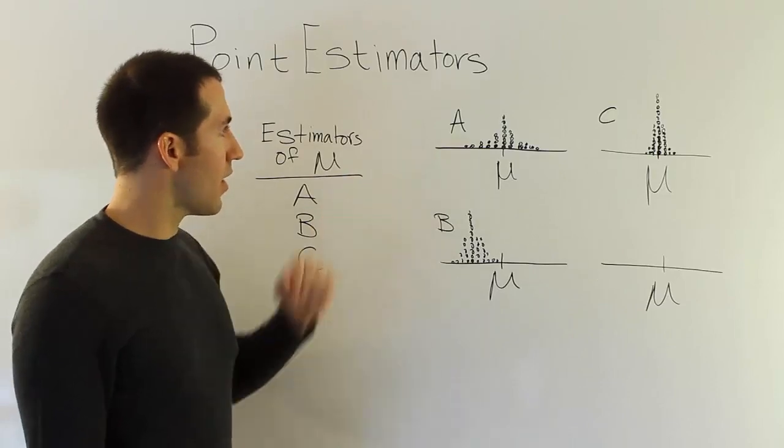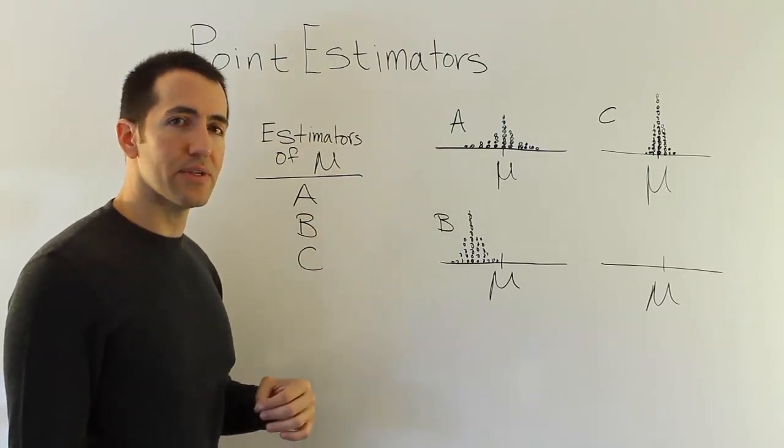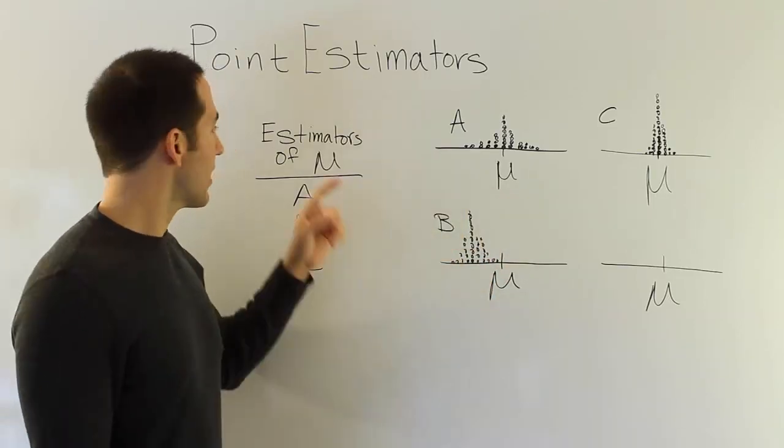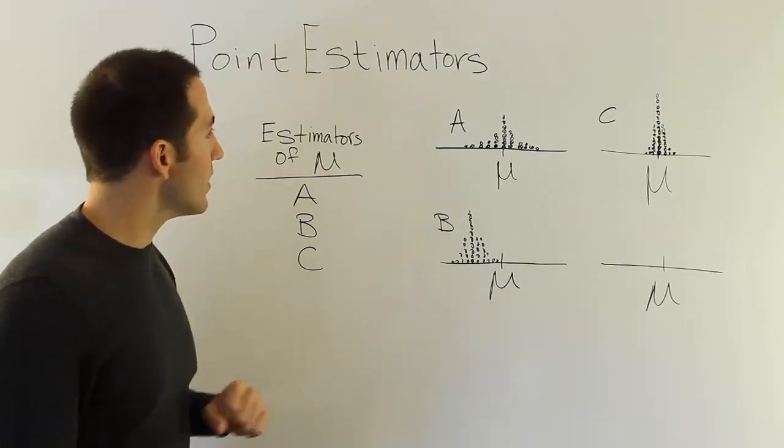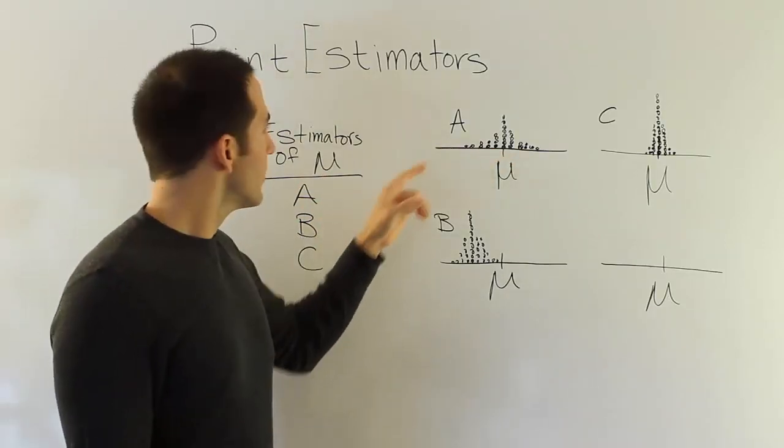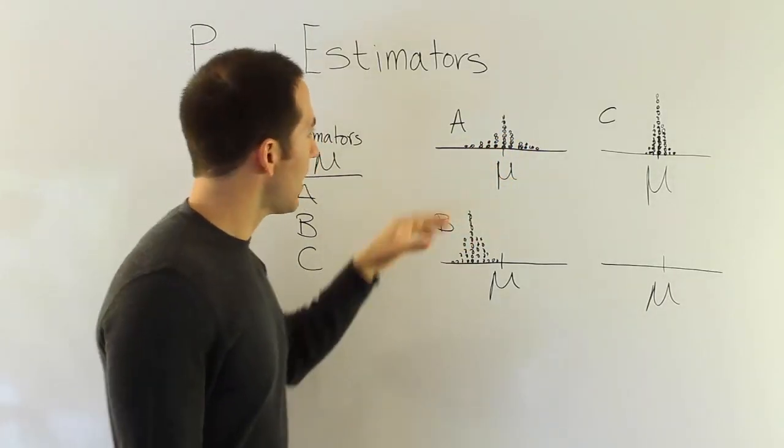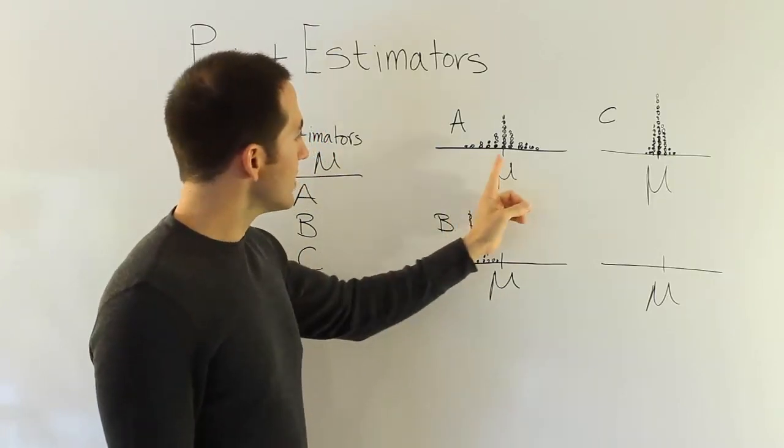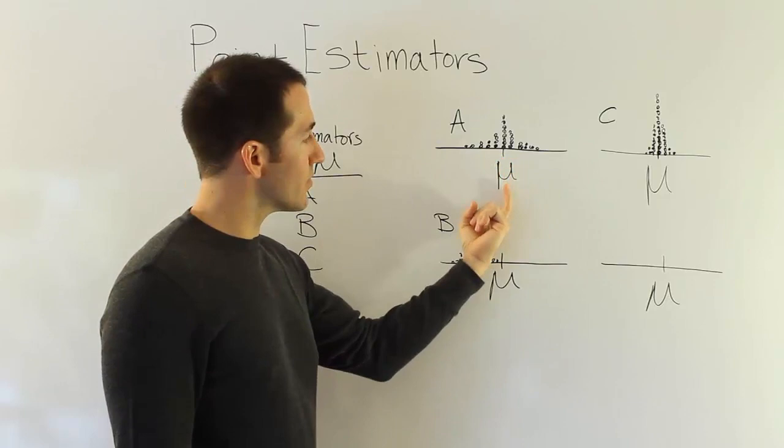So let's talk about how A, B, and C have done, and try to figure out which one we would like to use if we were trying to know the true population value for mu and we had to rely on one of these estimators to get close to it. Try to think of it almost like a marksman. So these were the results of a marksman shooting at the target, trying to hit the mean. How would you judge A's performance? Well, first thing I notice is that it looks like A, the results of A's work here, are balanced around the mean.